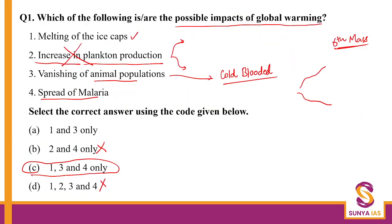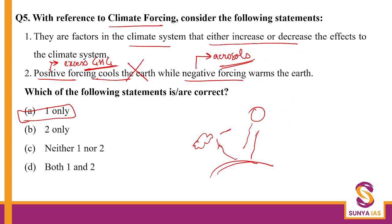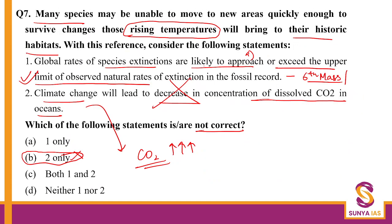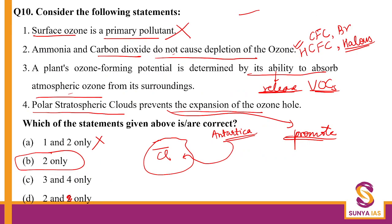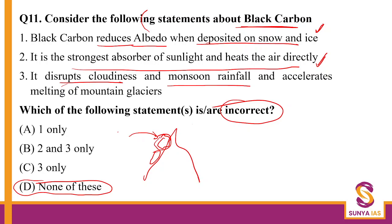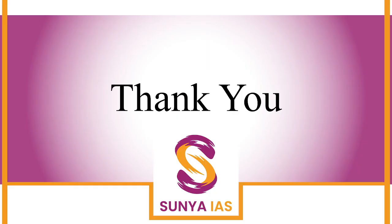Let us quickly recap what we covered: impacts of global warming, Rio plus 20, arranging greenhouse gases, Agenda 21, climate forcings, National Adaptation Fund on Climate Change, species impact from rising temperatures, Kigali agreement, rising temperatures and water, ozone depletion, and black carbon. Those of you who want to join the Prelims Crash Course may do so. I hope this lecture was useful and you gained clarity on topic number 7 — climate change. I will meet you in the next worksheet discussion. All the very best, please keep revising. Thank you.